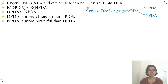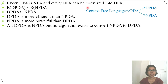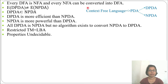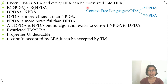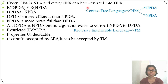For context-free language, PDA is divided into DPDA and NPDA. The expressive power of DPDA is not equal to the expressive power of NPDA — DPDA is a subset of NPDA. DPDA is more efficient, but NPDA is more powerful. In finite automata DFA was more efficient, but in PDA, NPDA is more powerful. No algorithm exists to convert NPDA to DPDA. For LBA, all properties are undecidable — it is considered a restricted Turing machine — and epsilon cannot be accepted by LBA; minimum input size for LBA is 1.